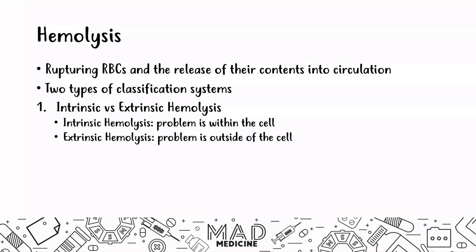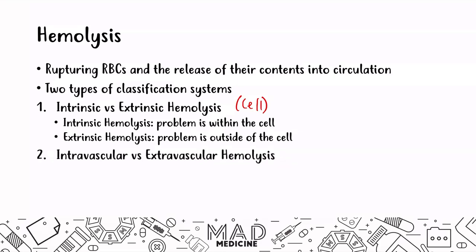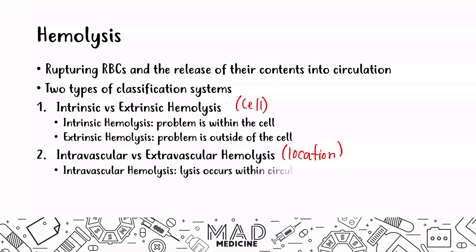The second type of classification is not based on the cell — whether it's inside or outside — but rather on the location of hemolysis, and that's going to be intravascular or extravascular. In intravascular hemolysis, the lysis occurs within the vasculature, within the circulatory system. In extravascular hemolysis, lysis occurs outside of the vasculature.